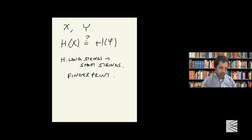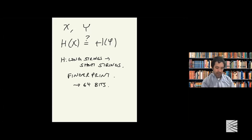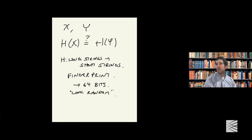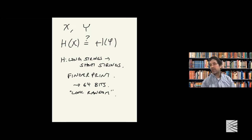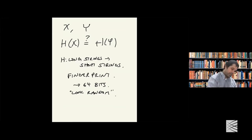You take some big document and turn it into, say, 64 bits, or more, depending on the situation. These hash functions are designed to look random, but they're an actual function — you get back the same answer every time. You use this as a fingerprint test for exact equality: if two documents are the same, they'll give the same hash value, and if they're different, you can make it as unlikely as you want that they'd come up as the same.